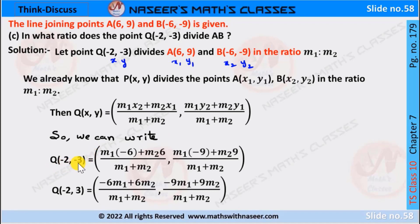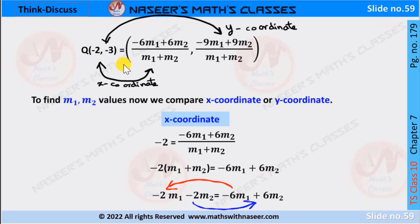we can write Q(−2,−3) = (M1·(−6) + M2·6)/(M1+M2), comma (M1·(−9) + M2·9)/(M1+M2). M1 into −6 is −6M1, M2 into 6 is 6M2, M1 into −9 is −9M1, M2 into 9 is 9M2. To find M1 and M2 we compare X coordinates, so we write −2 = (−6M1 + 6M2)/(M1+M2).